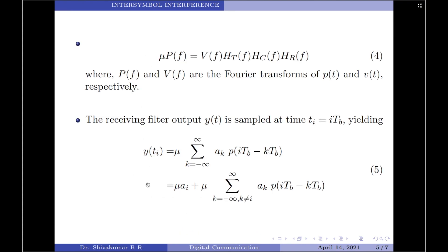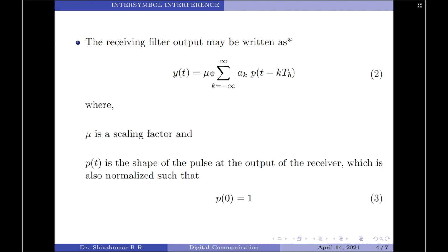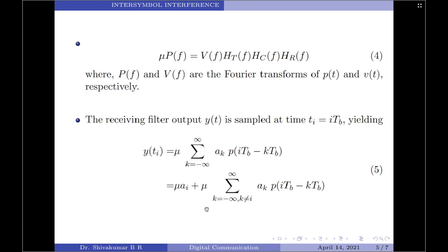That is why, when writing the expression for the output of the filter, we included μ as a scaling factor. Therefore, looking into this equation, we can conclude that when a sequence of short pulses is transmitted through a dispersive system, the dispersed responses originating from different symbol intervals will interfere with each other, thereby resulting in inter-symbol interference.